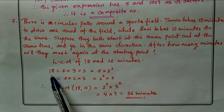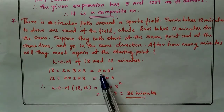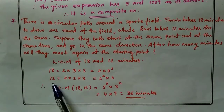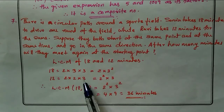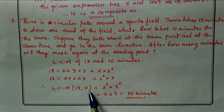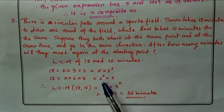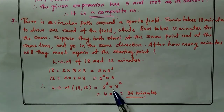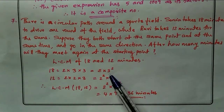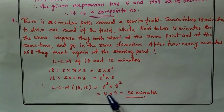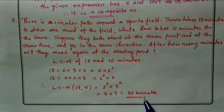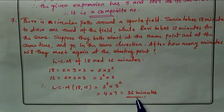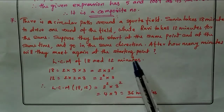18 can be written as 2 × 3² and 12 can be written as 2² × 3. LCM of 18 and 12: take the highest powers — 2² and 3² — so LCM = 2² × 3² = 4 × 9 = 36. After 36 minutes they will meet again at the starting point.